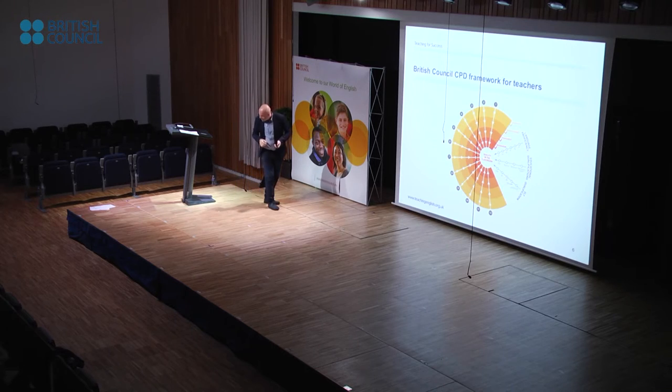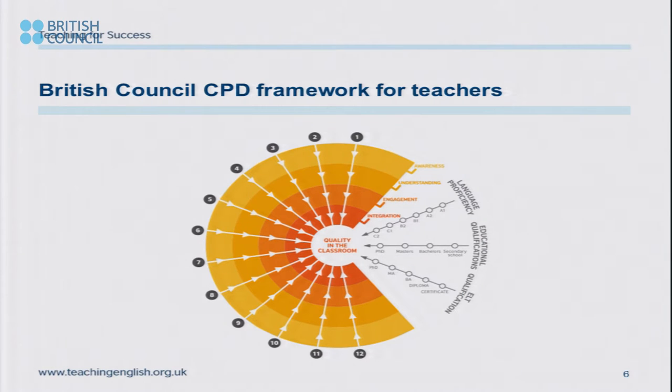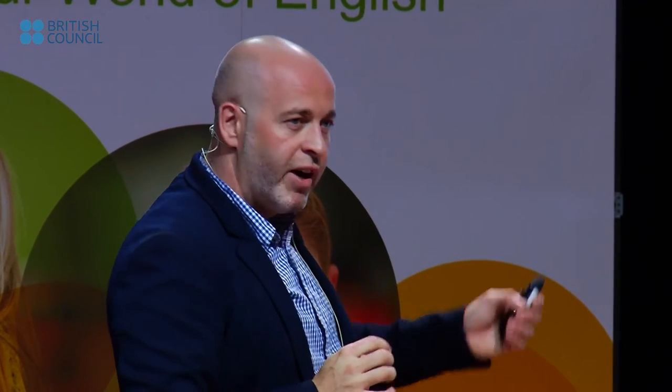This is what the British Council's CPD framework for teachers looks like. If you remember 80s video games, it looks a bit like Pac-Man. You've got numbers 1 to 12 around there, and then you've got — awareness, understanding, engagement, and integration. The numbers 1 to 12 represent what we've called professional practices — 12 areas of teaching that we think, based on our knowledge and experience with teaching, make up what essentially is teaching, good or bad or otherwise.